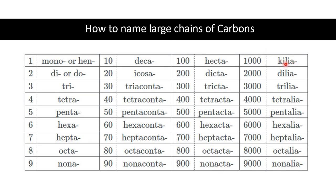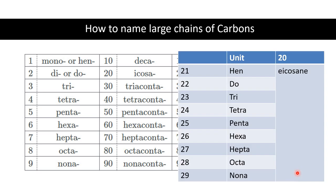What about 1000 carbons? The name kiliane is used for a 1000-carbon parent chain. For 2000 carbons, the word deliane is used. For 3000 carbons, triliene; and then tetraliene, pentaliene, hexaliene, heptaliene, octaliene, and nonaliene.